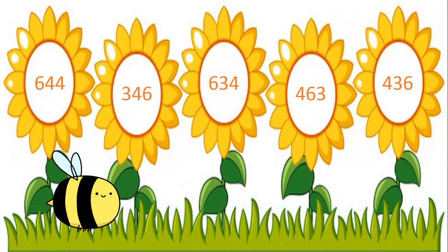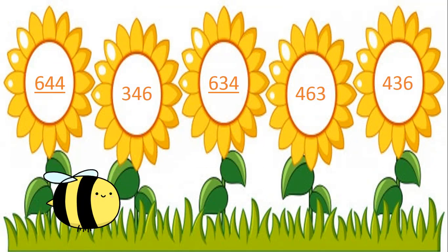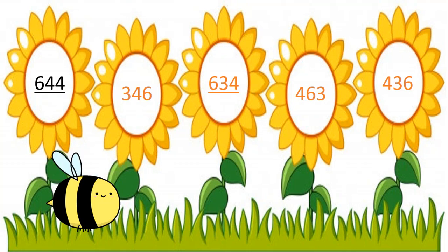Which digit in the hundreds place is the greatest? Yes, 6. But see, we have two numbers with the same digits in the hundreds place — that is 644 and 634. When the digits in the hundreds place are the same, we see the digits in the tens place. That is 4 and 3. Which digit in the tens place is the greatest? 4. So the number 644 is the greatest number. I hope my kids, now you have understood how to find the greatest number.